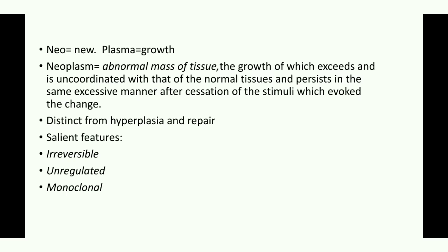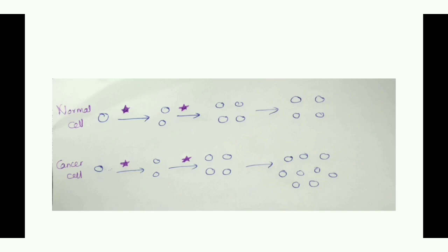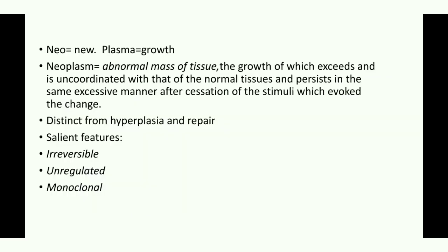In neoplasm it's an abnormal mass of tissue. In a normal cell, in the presence of a growth factor, the cell keeps on dividing, but once the growth factor is removed the cell stops its division. Whereas in a cancer cell, even if we remove the growth factor, the cell's division does not discontinue — the division persists in the same excessive manner, and that happens in neoplasm.